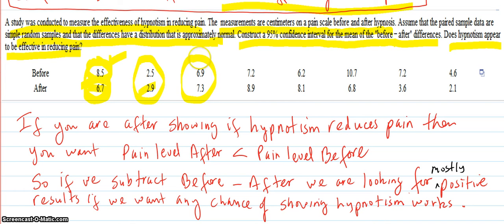is that you're controlling for the person. Because each person has different pain levels and different reactions to different things to raise that pain or lower that pain. So you want to take the person out of the equation.